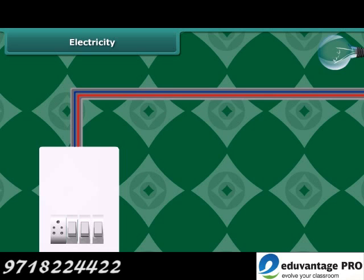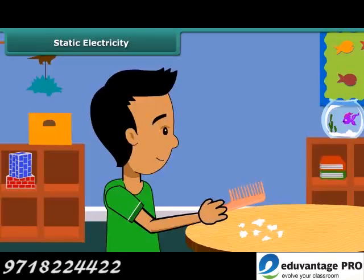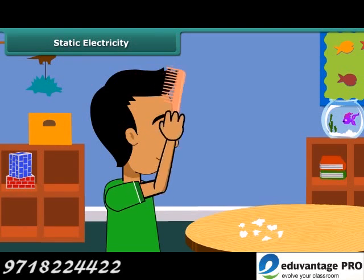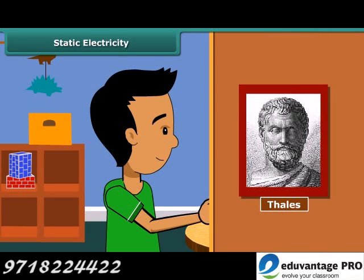When we comb our hair with a plastic comb and take it near small pieces of paper, the paper pieces are attracted toward the comb. We then say that the comb is charged with electricity. This was first noticed by a Greek man named Thales over 2,500 years ago.